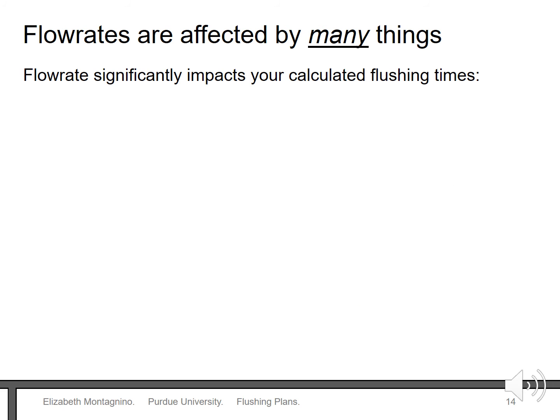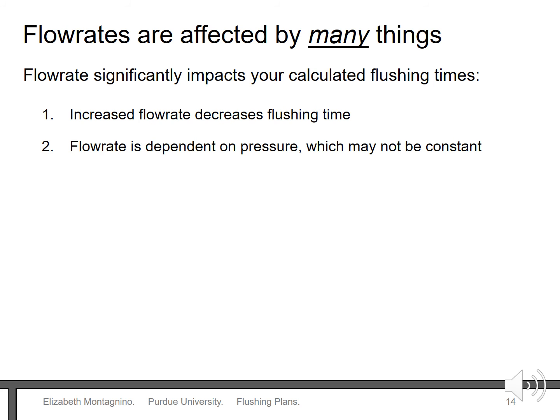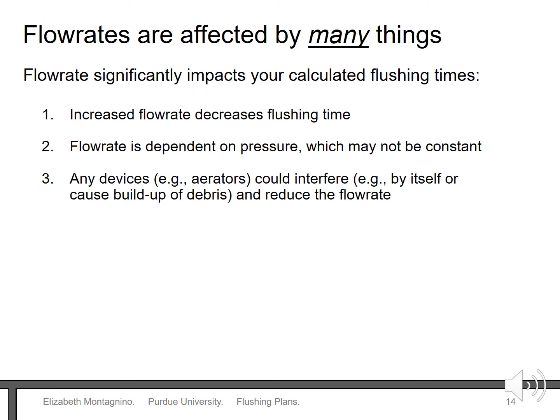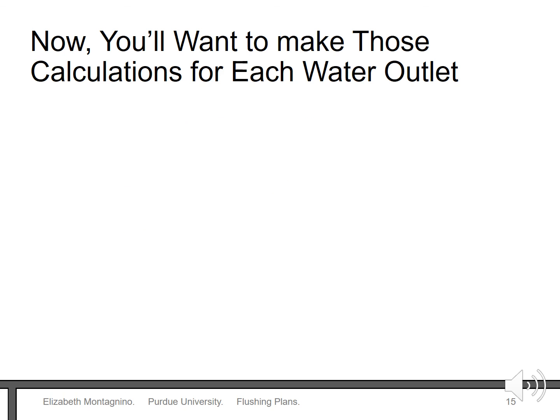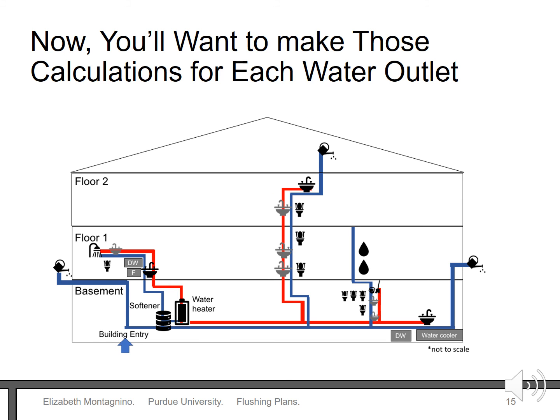A few points about flow rate you should recognize. The speed at which water exits a faucet will affect how long it takes to remove the water in the pipes and tanks. There isn't an endless supply of water pressure — if you have too many activities happening at once, such as a washing machine, dishwasher, outdoor spigot, and showering, the speed at which water comes out of the faucets can drastically decrease. Any devices like aerators and filters can slow down the water coming out of a faucet. Remember that flow rates can vary for each tap inside the same room. The rest of the cold and hot water plumbing outlets would need to be flushed, so you can repeat the calculation at all those other outlets.